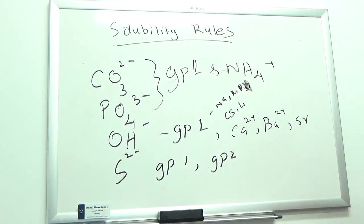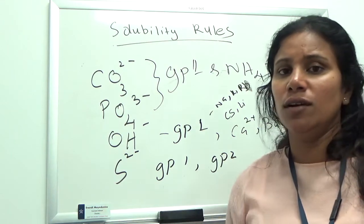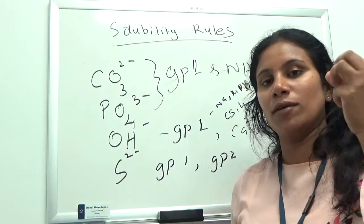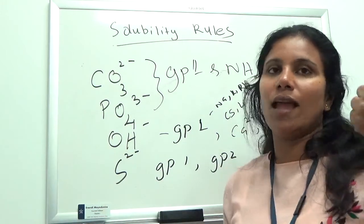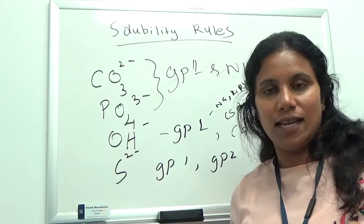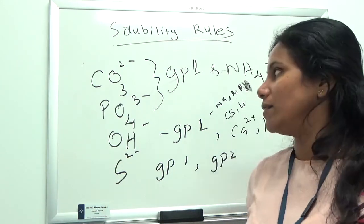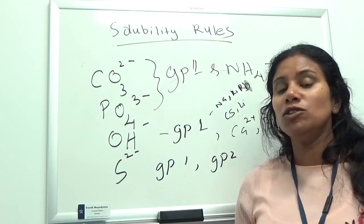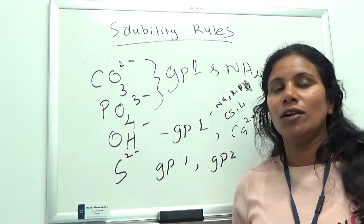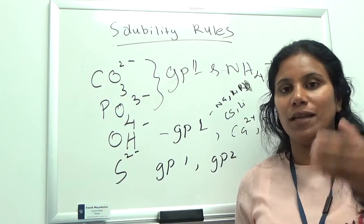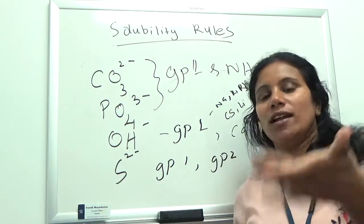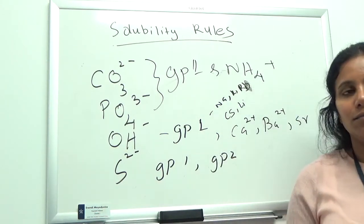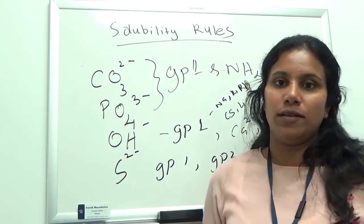So these are the solubility rules. For soluble compounds, if your compound has nitrate, acetate, or a Group 1 cation, it's definitely soluble. For halides like chloride, bromide, and iodide, the compound is usually soluble except for silver, mercury, and lead. For example, silver chloride is insoluble, but potassium chloride is soluble. Knowing these patterns makes it easy to apply the solubility rules.